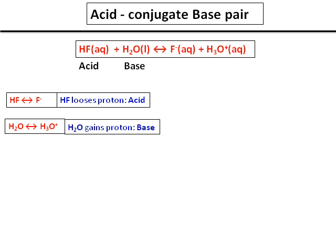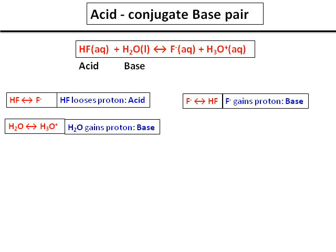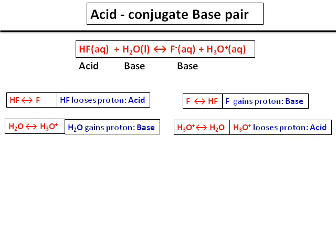Since it is an equilibrium reaction, it goes in both directions. F minus becomes HF, so it is gaining a proton and therefore I will call it a base. And H3O plus, as it loses a proton, I will call it an acid. All these definitions follow the Bronsted-Lowry definitions.